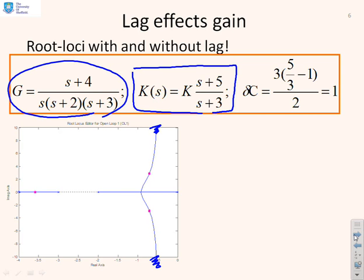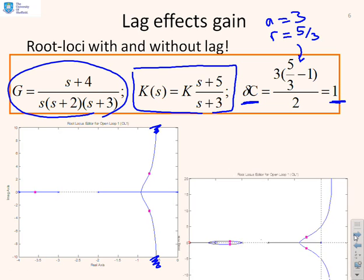Now I've worked out for you the movement of the centroid delta C by substituting in that A equals 3 and R equals 5/3 using the formula from the previous page. There it is. And so you see the movement of the centroid is one. The centroid is going to move to the right by one. So let's do the new root loci and see what's happened.